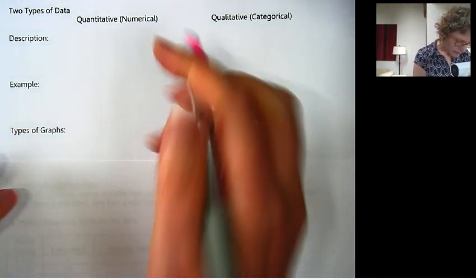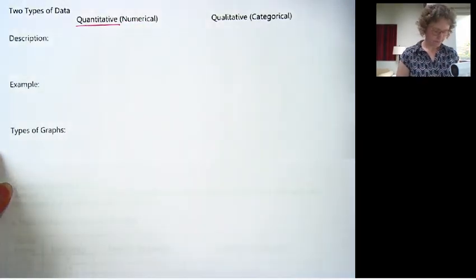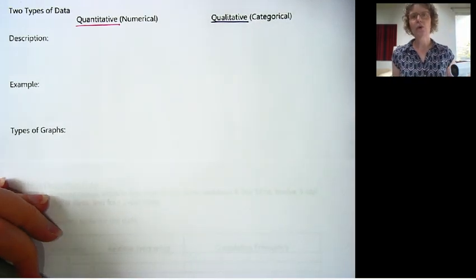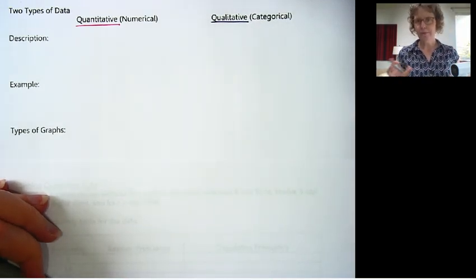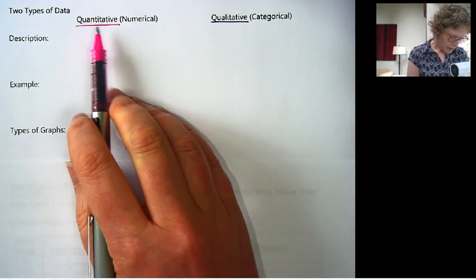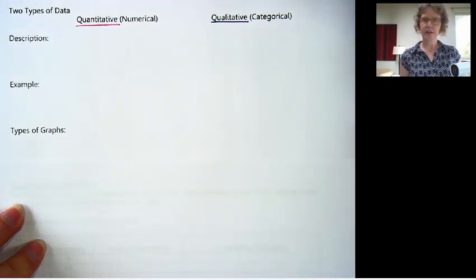The first one is quantitative or numerical. The second one is qualitative or categorical. I will probably switch back and forth between those terms. Different books use different terms. They mean the exact same thing as far as quantitative means the same as numerical, and qualitative means the same as categorical.